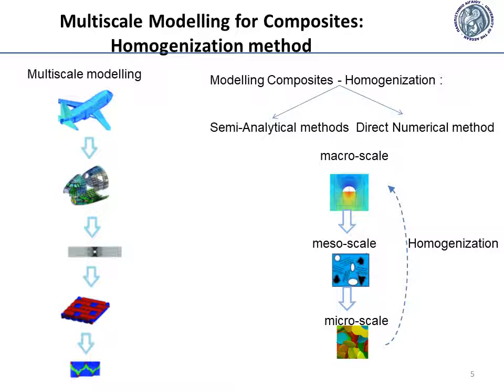On each level, particular approaches are used for the description of the system. The following levels are usually distinguished. In this research, we use multiscale modeling in order to achieve homogenization of the material.